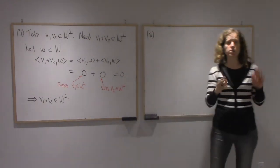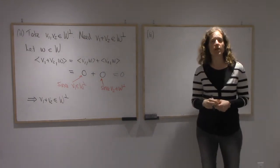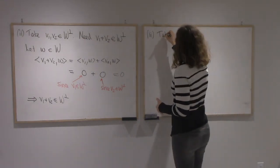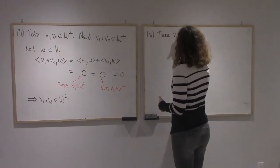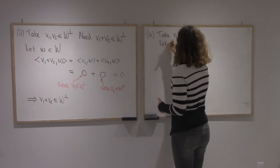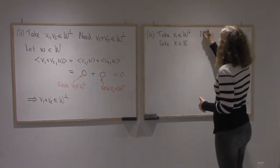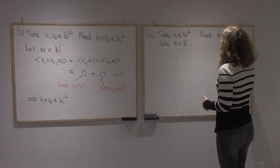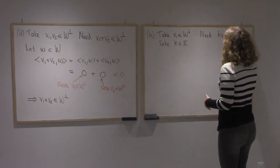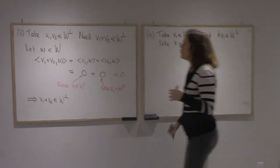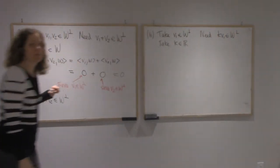Alright, so that's closed under addition. Now I'm going to prove that it's closed under scalar multiplication. So I'm going to take v1 in W-perp. And I'm going to take a real number k. We need to show that kv1 is in W-perp.